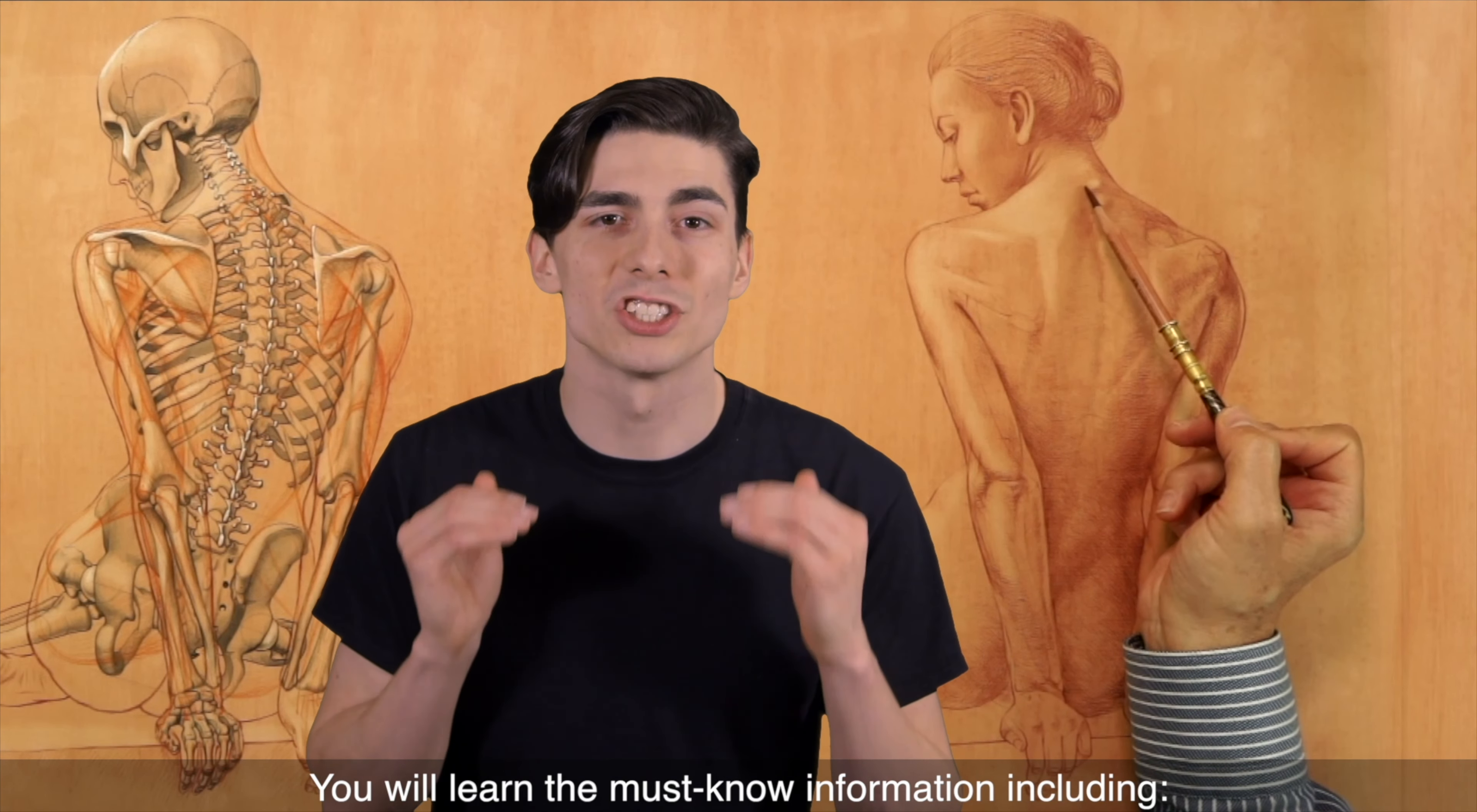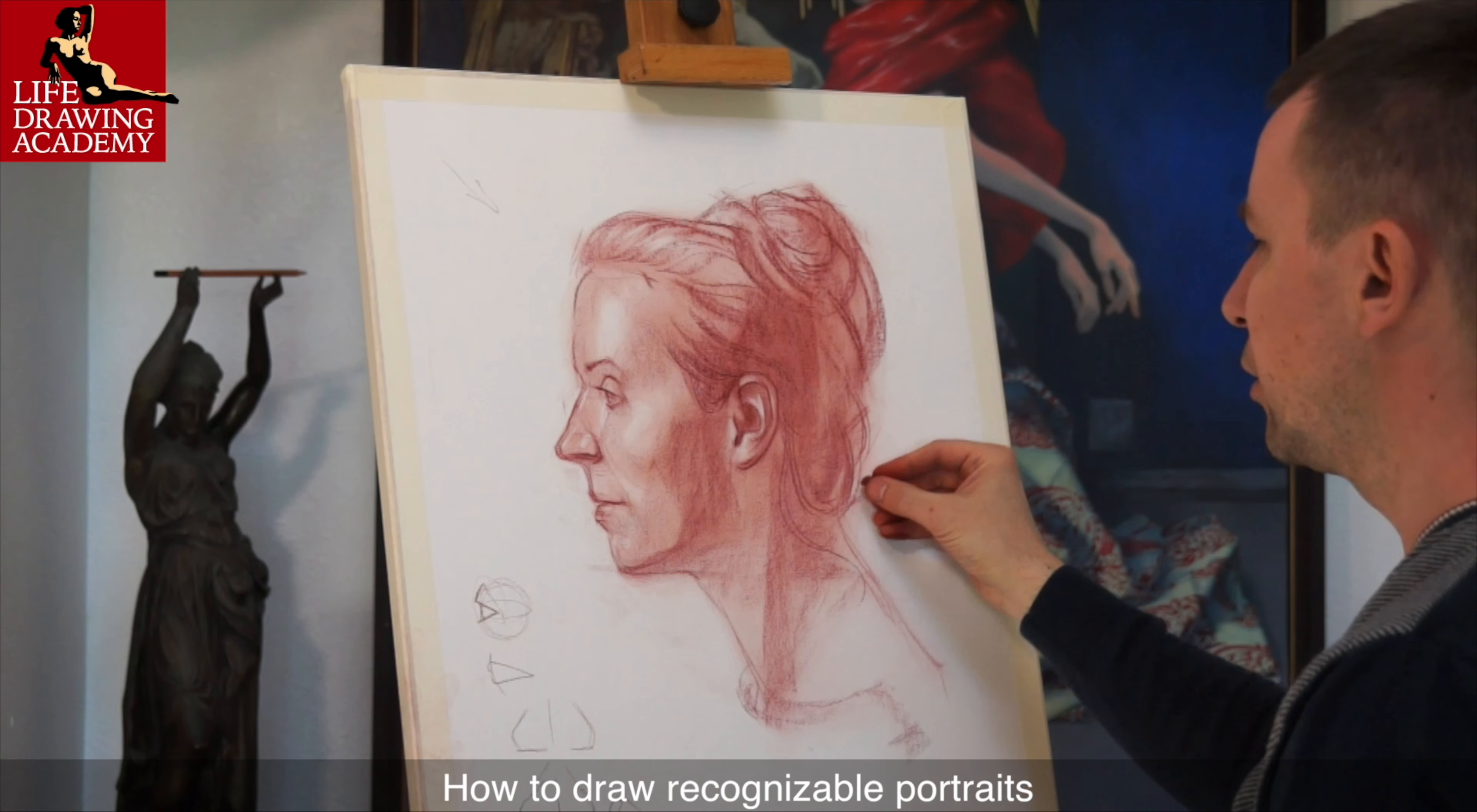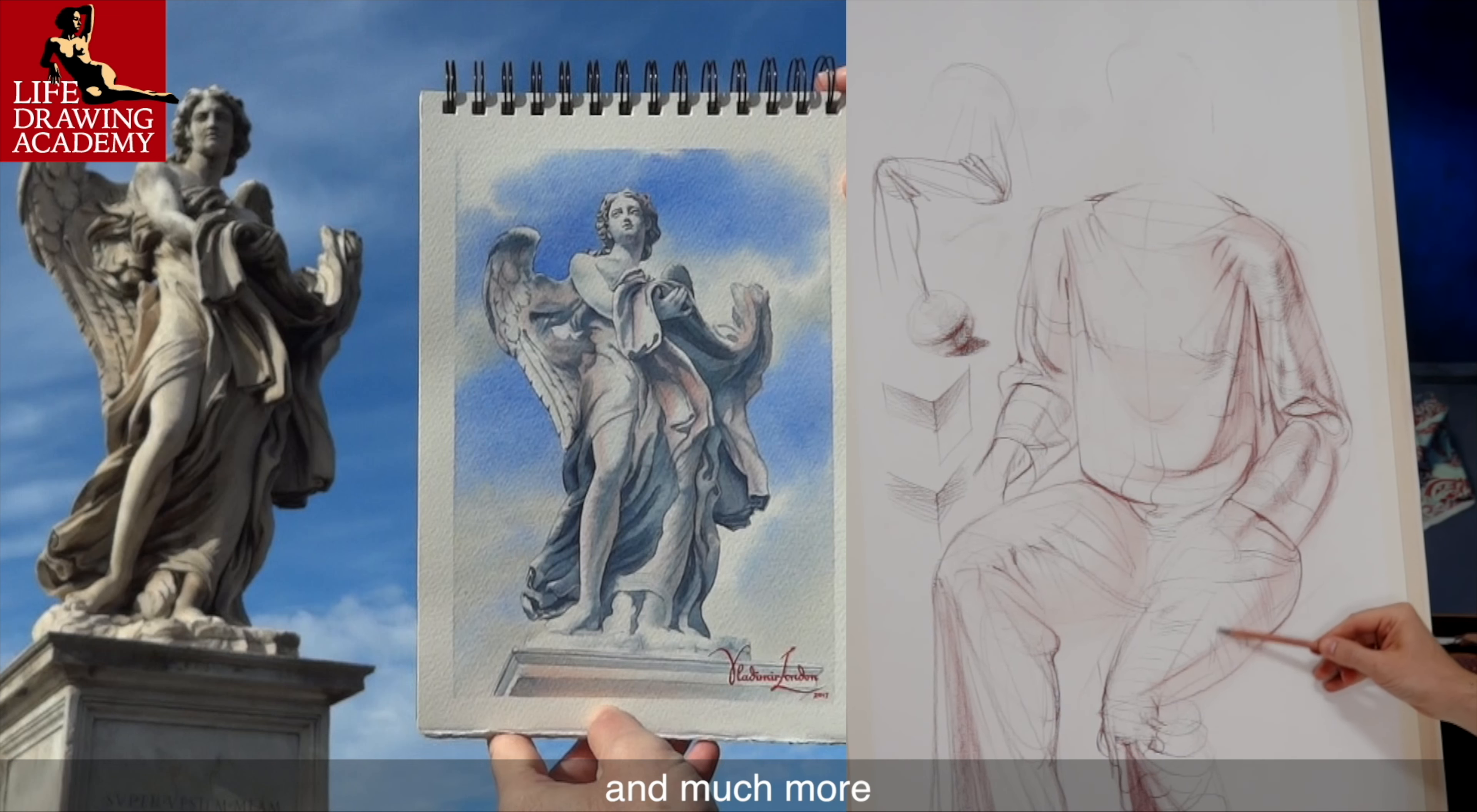You will learn the must-know information, including classical canons of human body proportions, proportions of a head and face, how to draw recognizable portraits, how to draw male and female figures, how to draw hands and feet, as well as how to draw draperies and clothed figures, and much more.